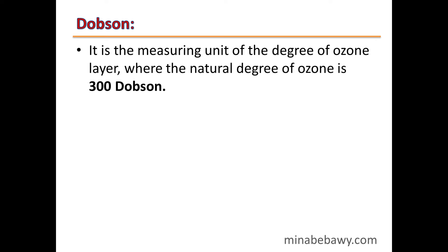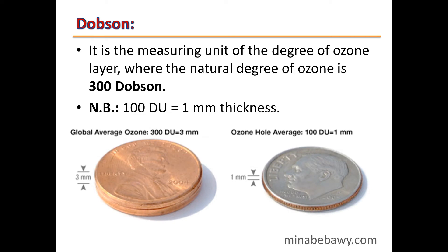The Dobson is the measuring unit of the degree of the ozone layer. The natural degree of ozone is 300 Dobson. Each 100 Dobson units is equivalent to 1 mm thickness under STP, because the thickness of ozone under STP is 3 mm and the normal thickness is 300 Dobson units. Each 1 mm is represented by 1 coin, so if we have 3 coins, this represents the thickness of the ozone layer under STP.